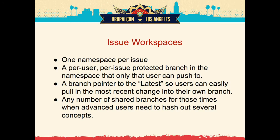There would be one namespace per issue. Once you open an issue and decide you want a namespace for code changes, you'd create one. This namespace would have a per-user, per-issue protected branch that only that user can push to - you're the maintainer of your own branch on that issue. Nobody else can push on top of your work. There would also be a "latest" branch pointer - just like git pull head, you could do git pull latest to get the most recent work without tracking down git hashes. Any number of shared branches that anybody could access can also exist in the namespace for collaborative efforts.